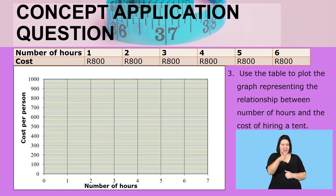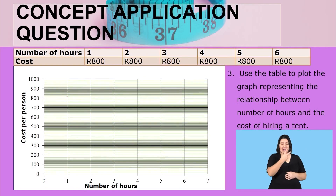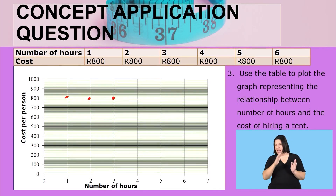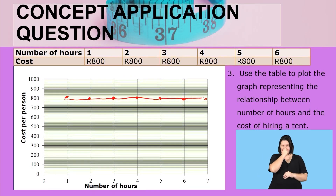Use the table to plot the graph representing the relationship between the number of hours and the cost of hiring a tent. For one hour, it's 800 rent. Two hours, still 800 rent. It's going to be 800 until the eighth hour. Join these points, and please use a ruler so that you get a straight line. That was the constant relationship.